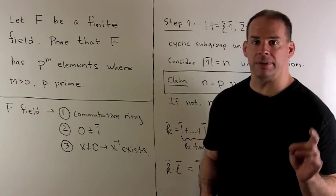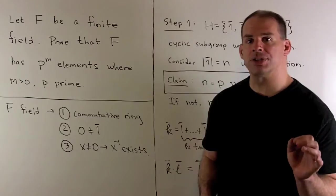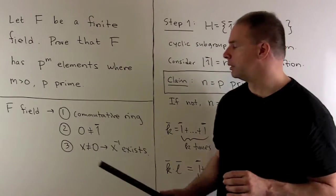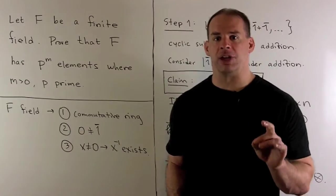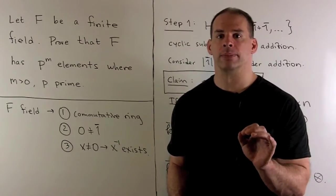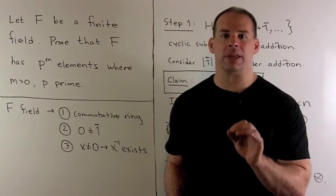Recall what it means for F to be a field. First, F is a commutative ring. That means we have an addition and a multiplication which are compatible. Here, we're assuming the multiplication is commutative.